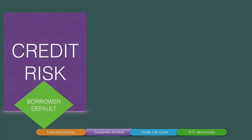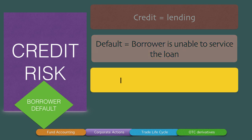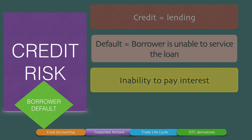Credit risk is of two types. The first type is borrower default. In banking, the term 'credit' is another term used for lending. The risk that the borrower is unable to service the loan — that is, the borrower defaults on the loan — is called credit risk. Credit risk includes the inability to pay interest by the borrower and/or the borrower's inability to repay the principal on maturity.